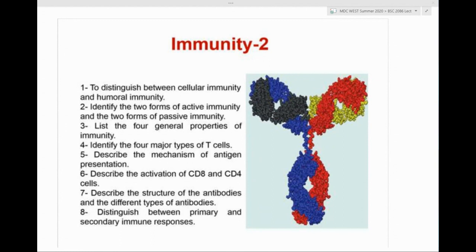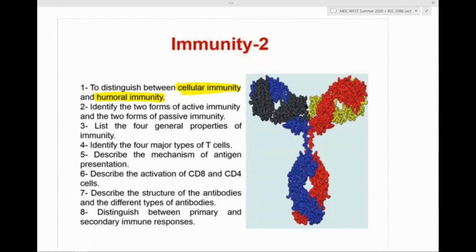Today we're going to do immunity part two. We're going to talk about the difference between cellular immunity and humoral immunity. Humoral is in the fluid, and cellular is directly towards the cells. For humoral immunity it will be B cells, and for cellular it will be T cells. We're going to talk about the two forms of active immunity and passive immunity.